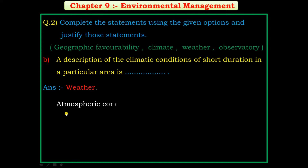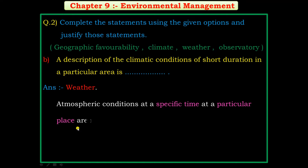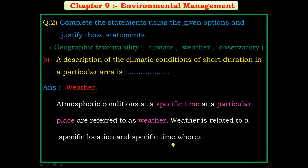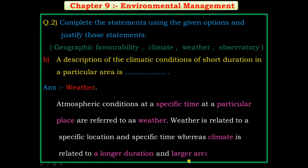The answer is weather. Explanation: atmospheric conditions at a specific time and a particular place are referred to as weather. Weather is related to a specific location and specific time, whereas climate is related to a longer duration and a larger area.